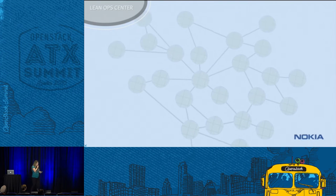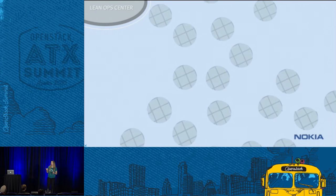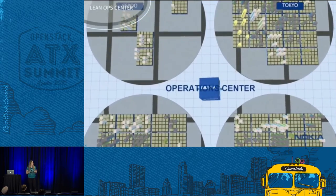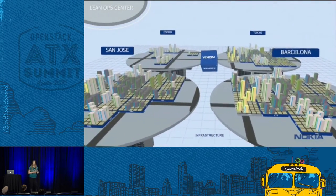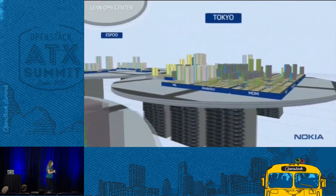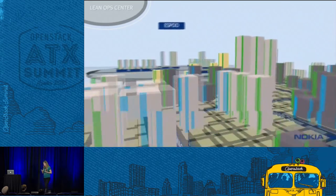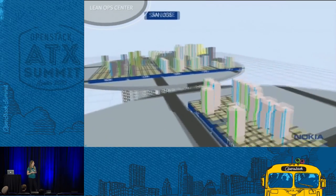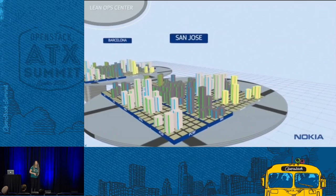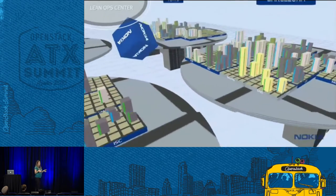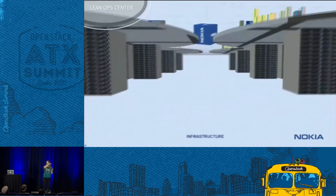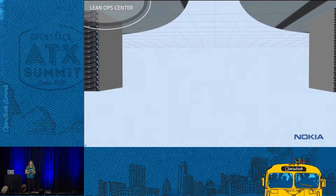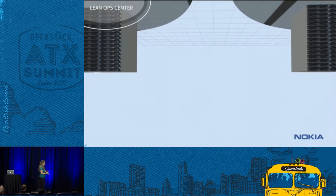I want to quickly show you what we call LeanOps. This is a visualization of a simulation we created at the Cloud Innovation Center within Nokia. Its purpose is really to provide service providers with the understanding of how they can bring lean operations to their NFV systems. What we're looking at is a visualization of a sophisticated cloud environment where we have both the virtual infrastructure and the physical infrastructure together — and we can see all of this at the same place.